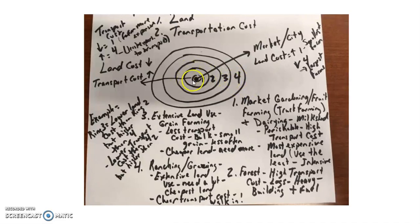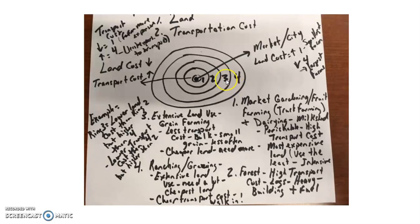As we look at this model, the further you go away from the city center, the land cost decreases but the transportation costs increase. For example, ring three — grain farming — has a lower land cost than ring two but a higher land cost than ring four, because the further you go from the city the lower the land cost. However, ring three has a lower transport cost than ring four but more than ring two. As you get further from the city, transportation costs increase.